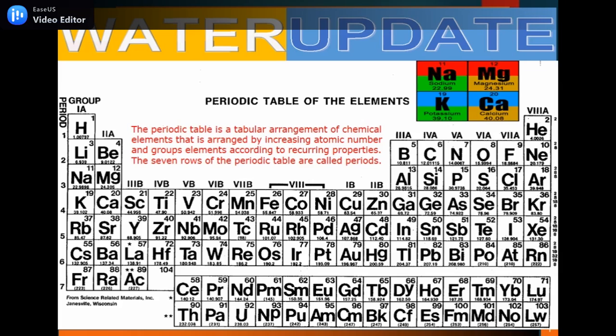As you all know, what is the periodic table? The periodic table is a tabular arrangement of chemical elements arranged by increasing atomic number, and groups elements according to recurring properties. The 7 rows of the periodic table are called periods. For example, sodium has an atomic number of 11 and atomic weight of 22.09.